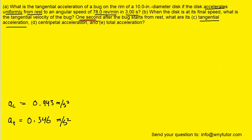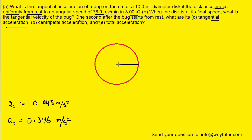To find the total acceleration, we draw a circle and note that we have two accelerations: the centripetal and the tangential. The centripetal acceleration always points toward the center of the circular path — we label that a_c. The tangential acceleration always points tangent to the circular path — we label that a_t, sliding it over to help us find the total acceleration. The total acceleration is simply the vector sum of those two, so we build a right triangle and use the Pythagorean theorem.